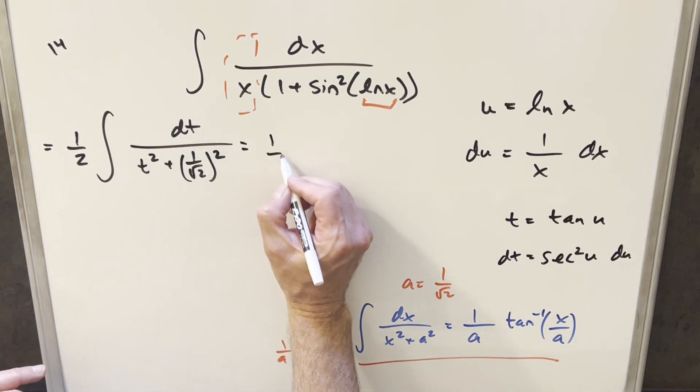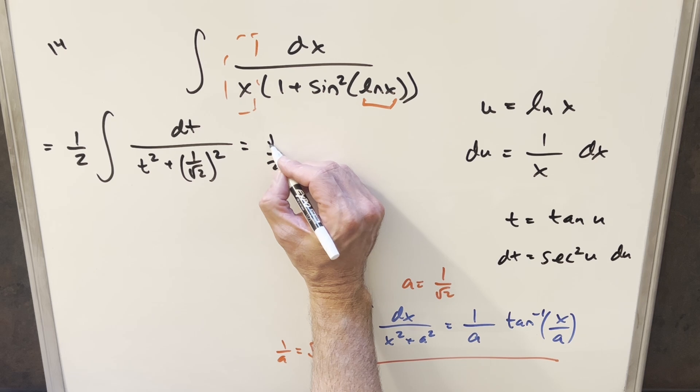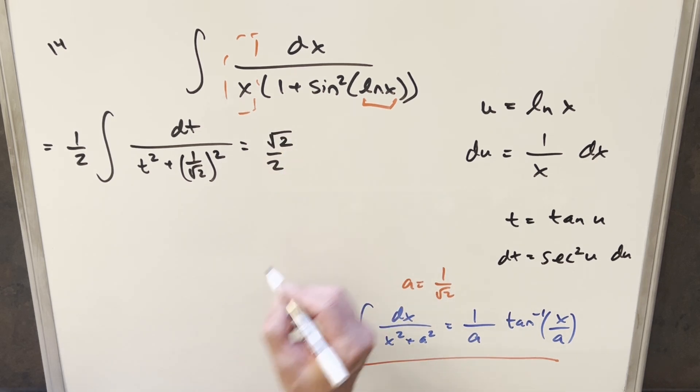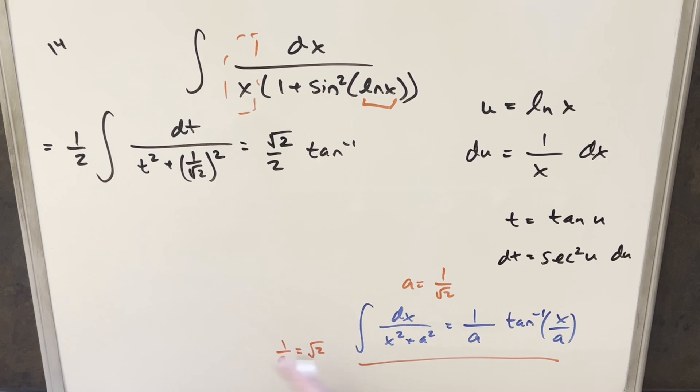So doing this, first we're going to have our 1 half up front, but then we're going to have this 1 over a, which is going to give us the square root of 2. So let me just squeeze that in there. But now we're just going to have this arctan part. So we can write this as arctan, the 1 over a is going to be square root of 2 times t.